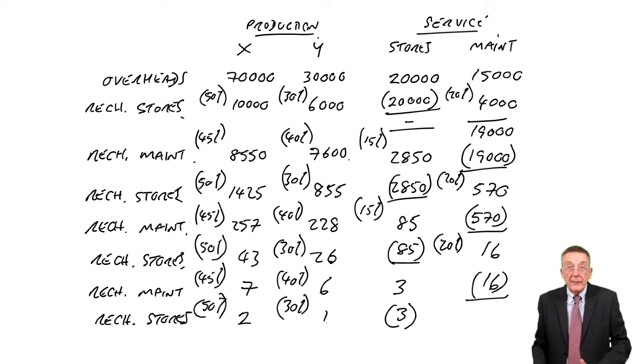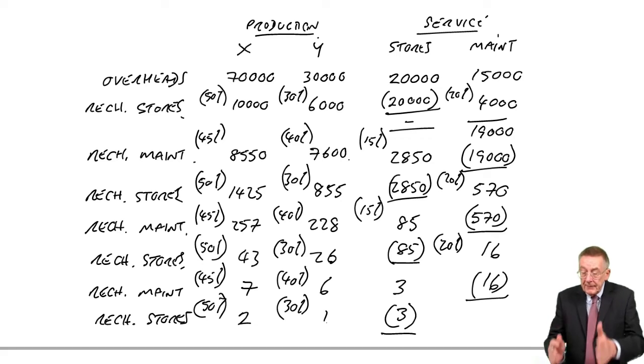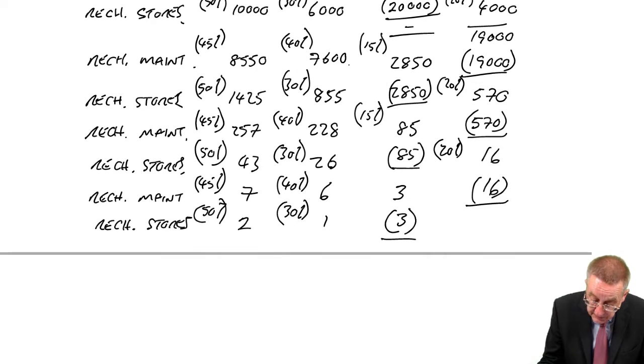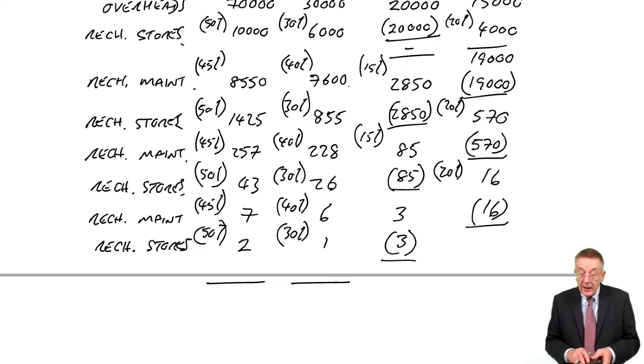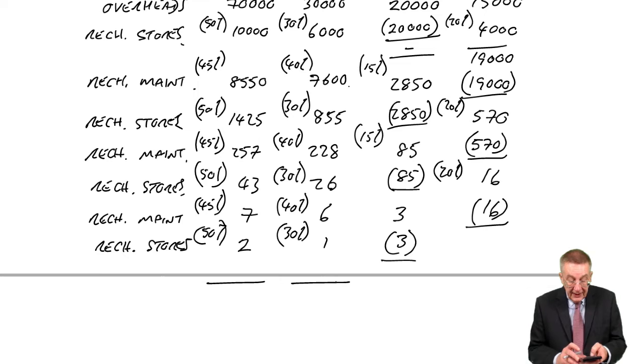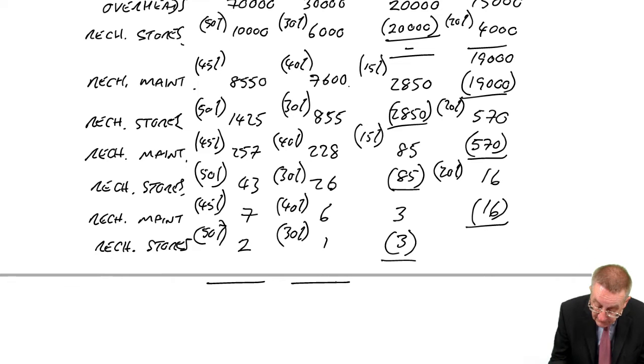And so we've got rid of the service departments completely. Again, that recharging backwards and forwards. It gets smaller and smaller until eventually becomes irrelevant. And what do we end up with in total for the production departments? For X, remember we had 70,000. In addition, 10,000, 8550, 1425, 257, 43, 7, 2. I get 90,284.